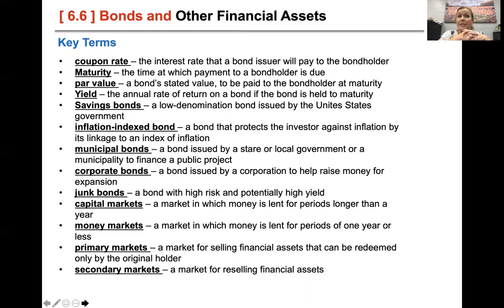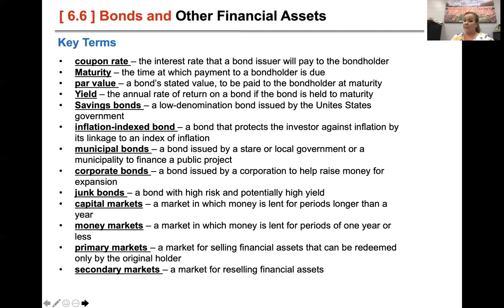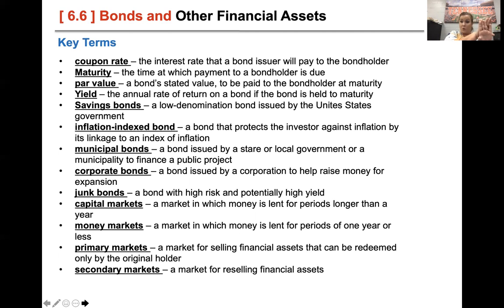Par value is the stated value at maturity — so when you cash in this bond, how much principal and interest will you get? The yield will be the annual rate of return if held to maturity, because you tend to gain interest on interest. Like the CD in 6.5, it was 5% annual interest but a yield of 5.13, because you make 5% interest in year one, then 5% on the principal and interest from year one — that's where you get a slightly higher overall yield.